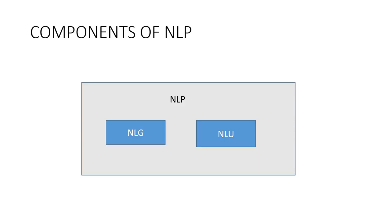This diagram completely represents the components of NLP. NLP consists of NLG — natural language generation — and NLU — natural language understanding.